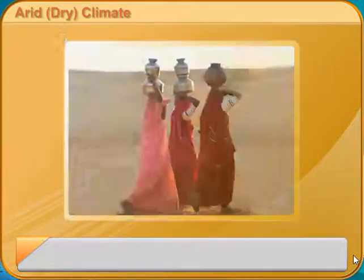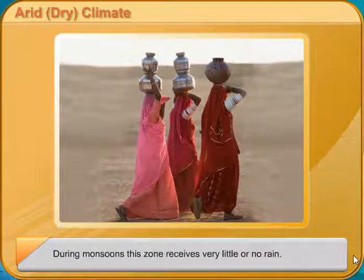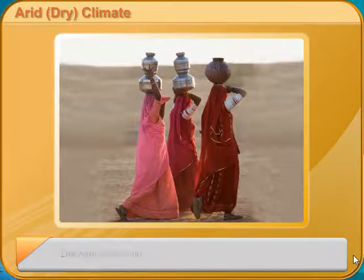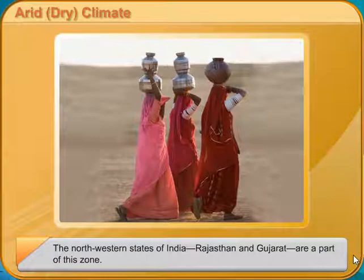Arid Dry Climate: This zone has hot summers. During monsoons, this zone receives very little or no rain. The winters are cold. The north-western states of India, Rajasthan and Gujarat, are a part of this zone.